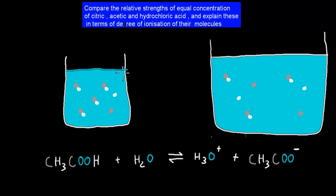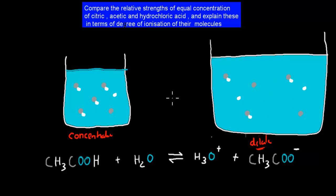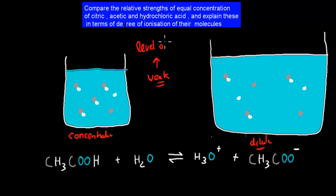Imagine we were to put the same amount of molecules — let's say of acetate — into two different volumes of water. In this case, this would be our concentrated solution, because we have five molecules of acetate in this much water. Compared to this much water, here this is our dilute solution, because they have more water for every molecule. You'd expect the actual acid to be just as weak in both cases, because weakness has to do with how much it ionizes — the level of ionization. You might expect both of these to have the same level of ionization, because concentration and dilution shouldn't be confused with weak and strong acids.